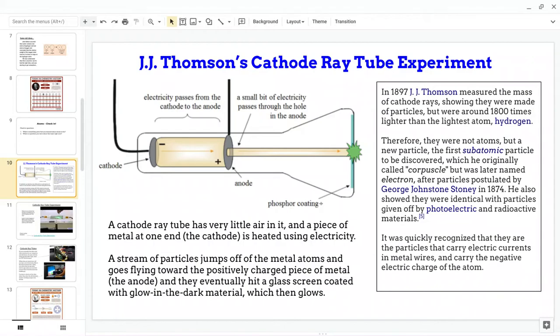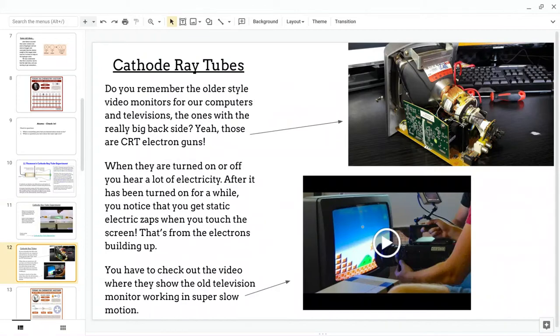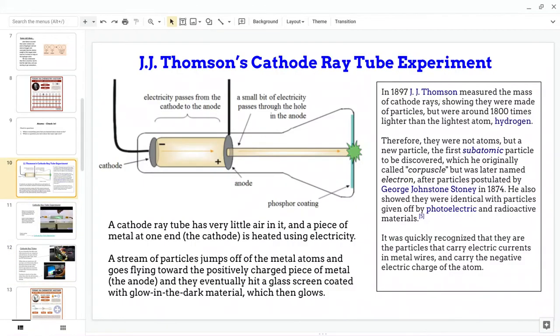So basically, when these little particles hit this glass that has a phosphor coating, it glows. And this is actually how you got the very first television sets. The front of the screen glows.